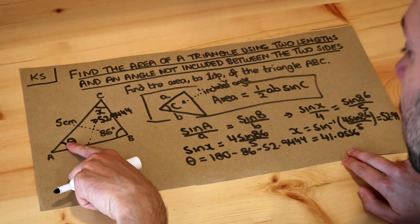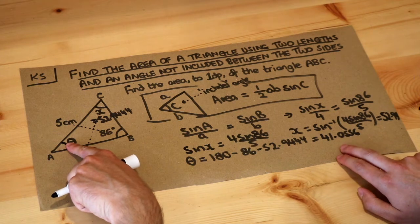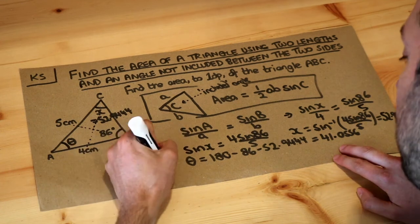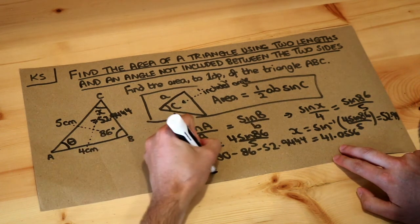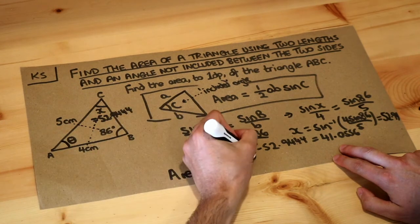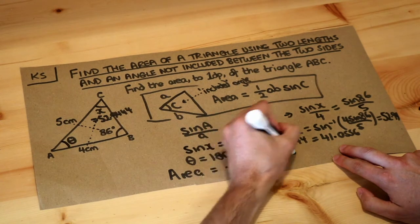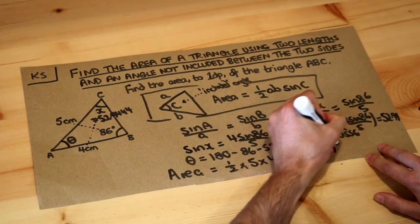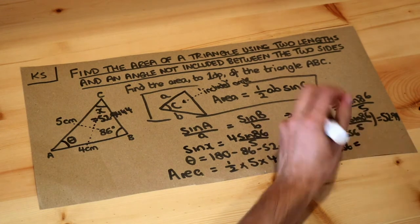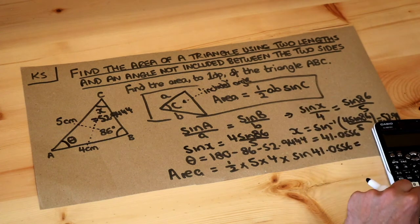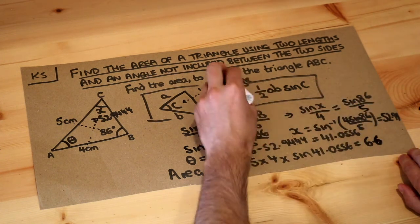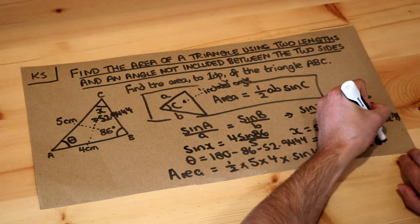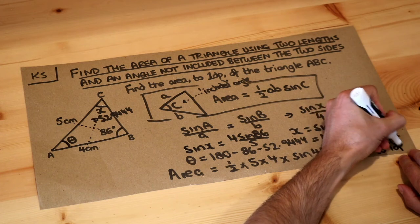So we've got this angle here and now we've got everything we need for the formula, because we've got two sides and the included angle between them. So the area will be half times the product of the two sides — 5 times 4 — times the sine of the included angle, which is 41.0556. If I put that all into my calculator, that gives me 6.6 to one decimal place, and that's going to be in centimetres squared. So that is the final answer.